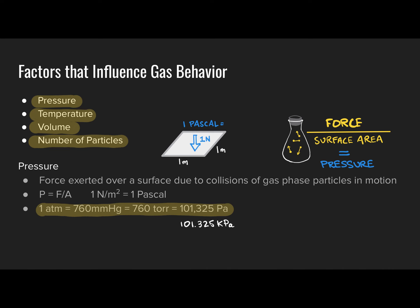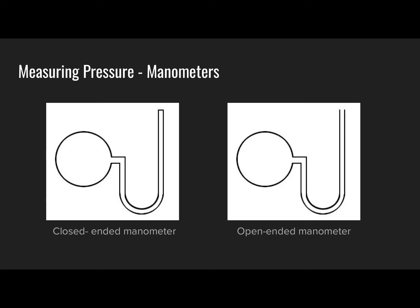That is pressure. Let's go ahead and move on to how we are going to measure pressure. Continuing our conversation about the ability to measure pressure — the tool which we use as chemists to make pressure measurements is a device called a manometer.